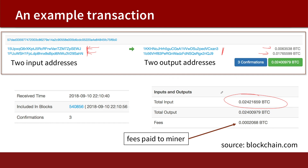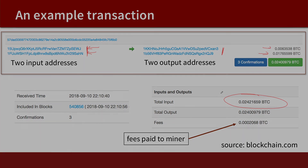The UTXO model is actually quite clever — it means miners don't have to keep the entire blockchain in memory. All they have to do is keep the set of UTXOs in memory, and they can make sure that a UTXO is never spent more than once. All the value in the blockchain network is held in these UTXOs, and the owner of a particular address is the person who has the secret key that allows them to sign on behalf of that address.